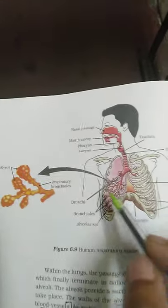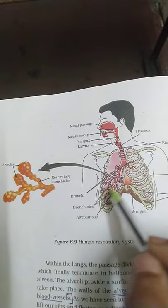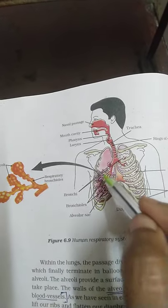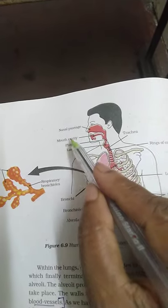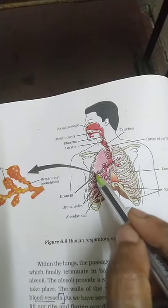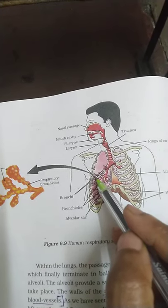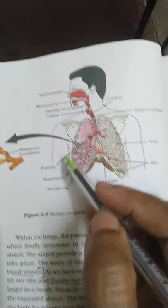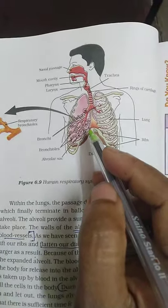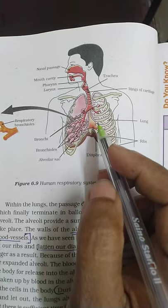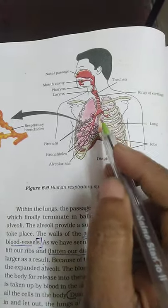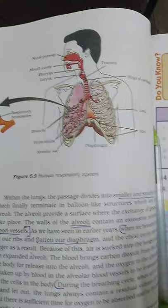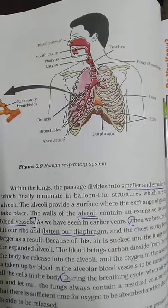The capillaries connected to the alveoli bring carbon dioxide from all the organs and pour it into the alveoli so it can be exhaled out. The oxygen that has been inhaled reaches the alveoli, and from there arteries and capillaries take the oxygen to the cells so that respiration — the breaking down of nutrients — can take place and energy can be obtained. This is how the respiratory system works in human beings.